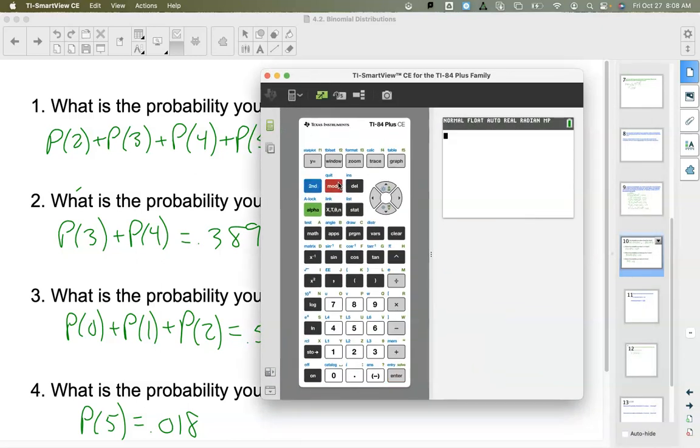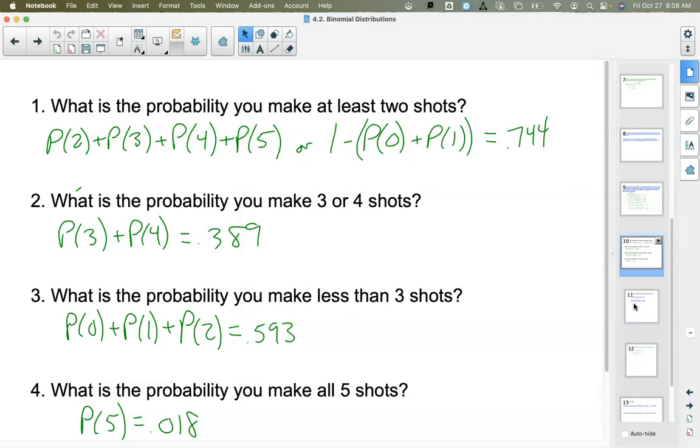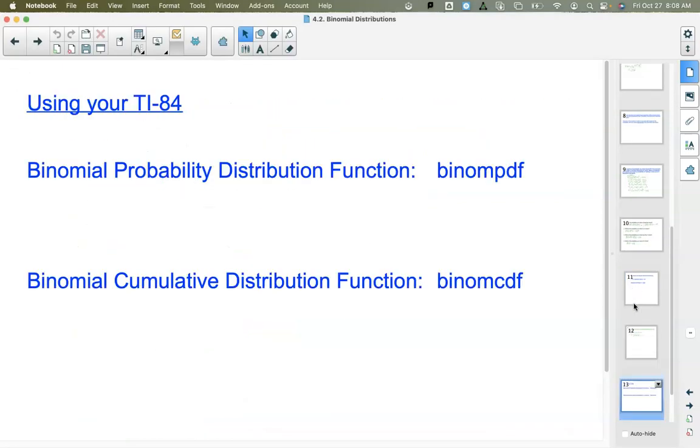Another thing I wanted to show you is a couple commands that our calculator has. The first one is the binomial probability distribution function, or what I usually just say is binompdf, our binompdf command. Our second one is a binomial cumulative distribution function. Cumulative meaning to add up from the beginning.